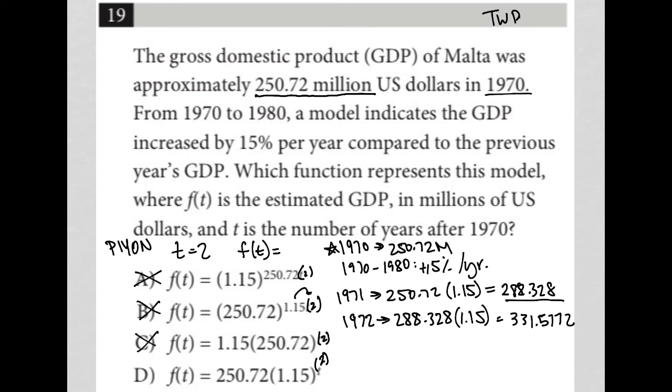And then for choice D, 1.15 squared, and then multiply that by 250.72. And here I do get the answer 331, so choice D is the correct answer.